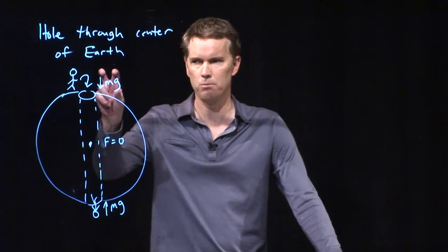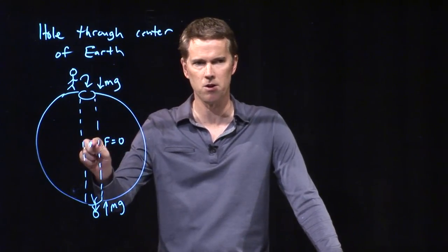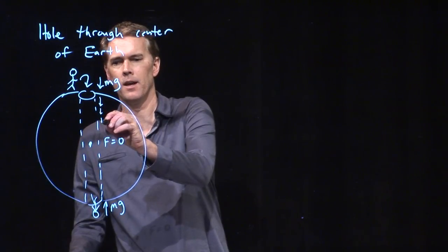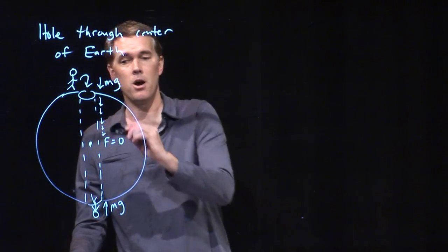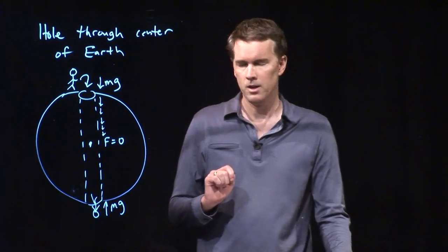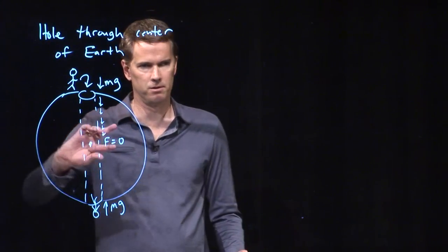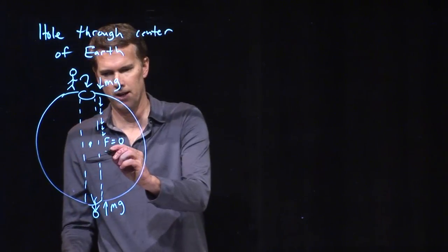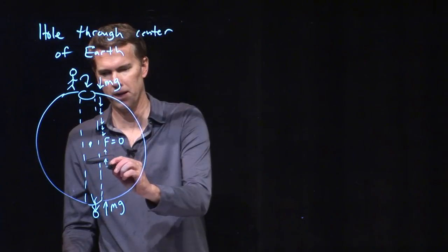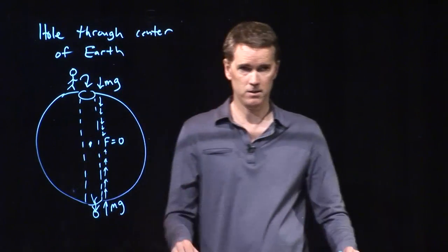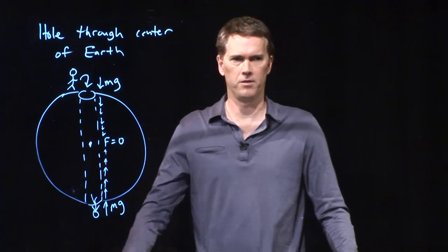Gravity was mg pointing down. It goes to zero, but it's pointing down the whole way. It of course gets smaller and smaller, eventually coming to zero, but it never points the other way until he gets on the other side of the center. And once he gets on the other side of the center by symmetry, that force has to get bigger and bigger in magnitude, pointing back towards the center.